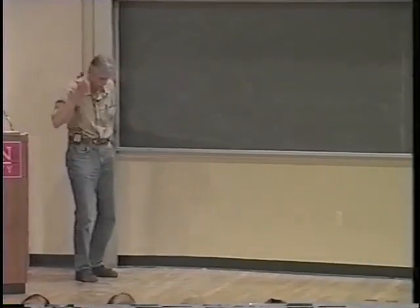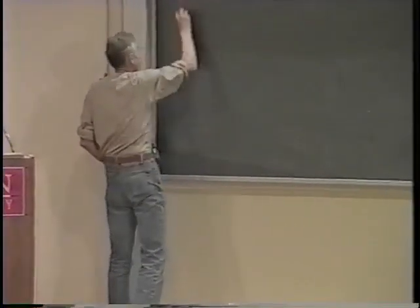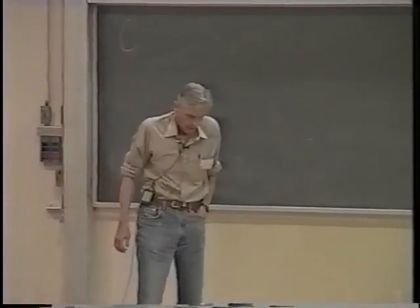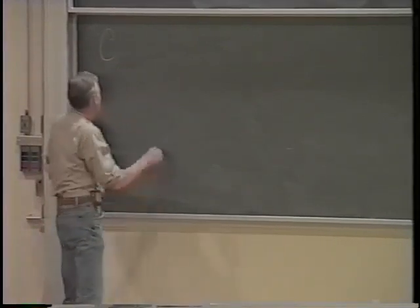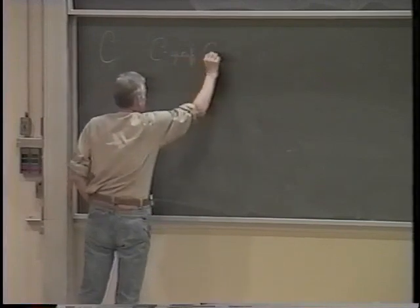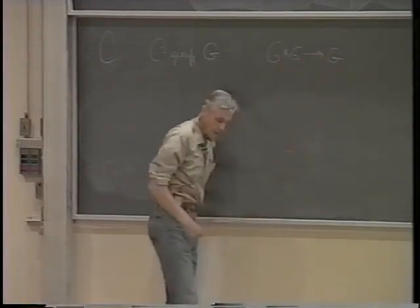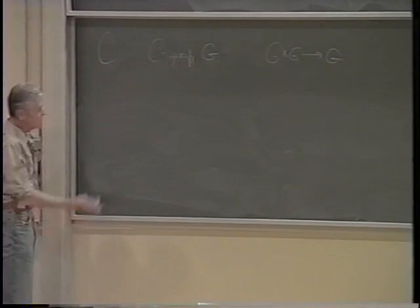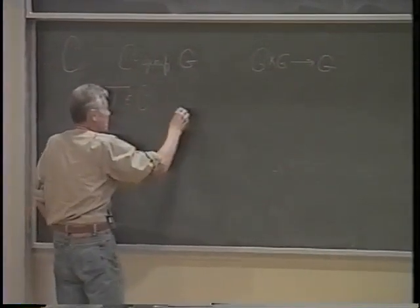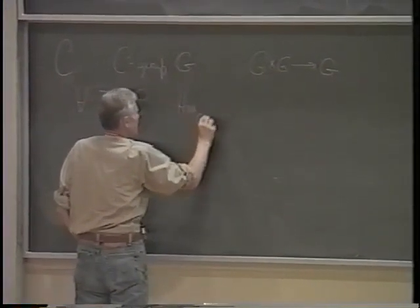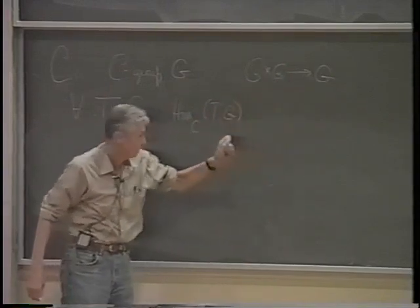The finite group scheme is a very special example of the notion of a group in a category. If you have a category C with finite products, you have the notion of a group in the category, or a C-group G, which is simply an object G in the category, together with a map that looks like a law of composition. The only axiom on that map is that for all objects T in C, the set Hom(C,T,G) should be a group under the law of composition which this map induces on this set.